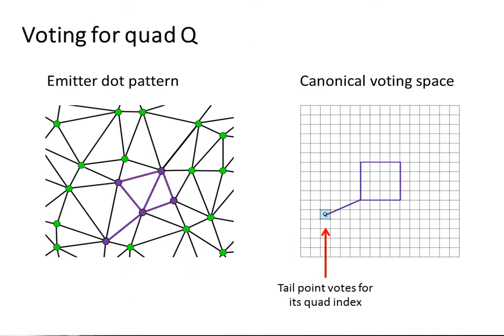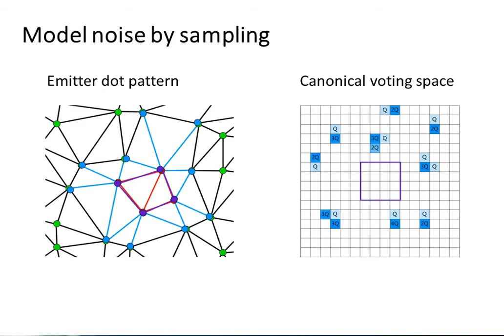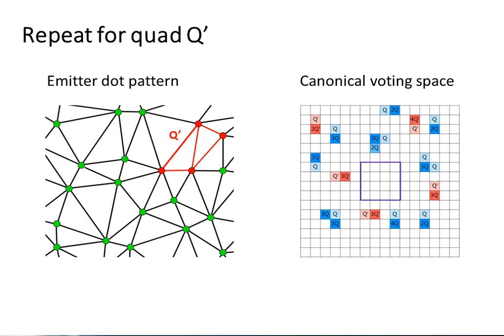We build up a lookup table in the canonical frame that is used at runtime to identify quads from the positions of their tail points using a voting scheme. Each tail point belonging to quad Q votes for position in the canonical frame by adding to a histogram over quad indices at that location. The voting process is repeated many times for quad Q by sampling to model noise. This is followed by voting for the next quad Q' and so on.